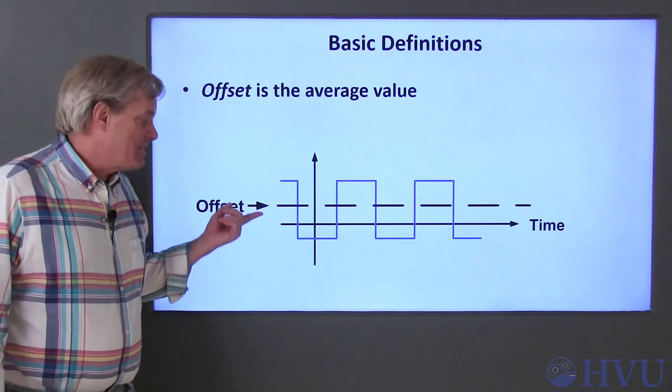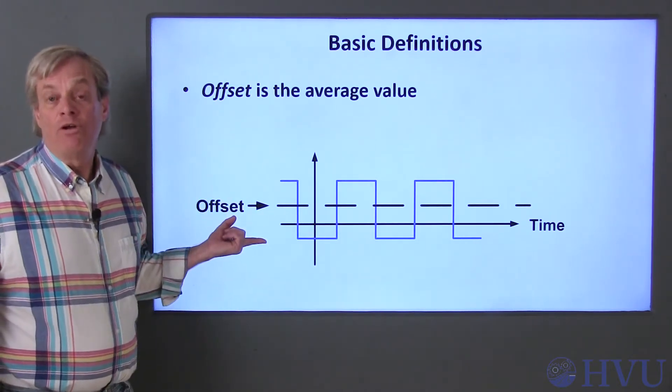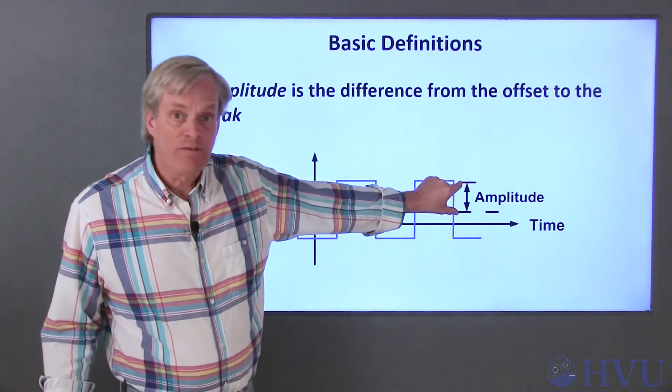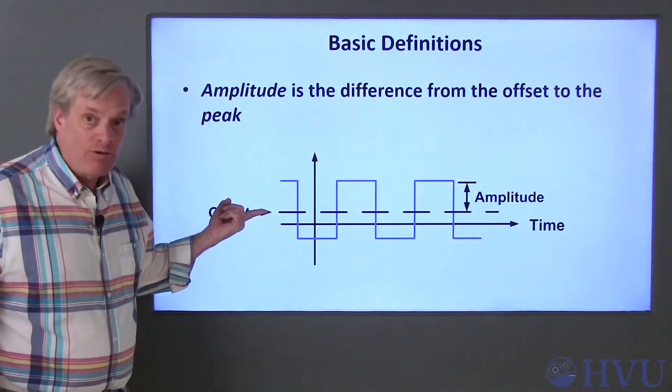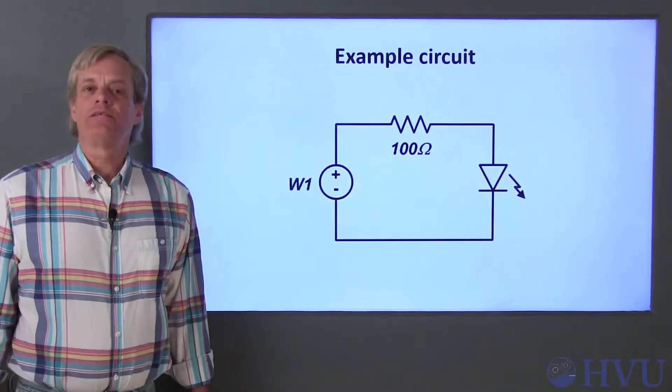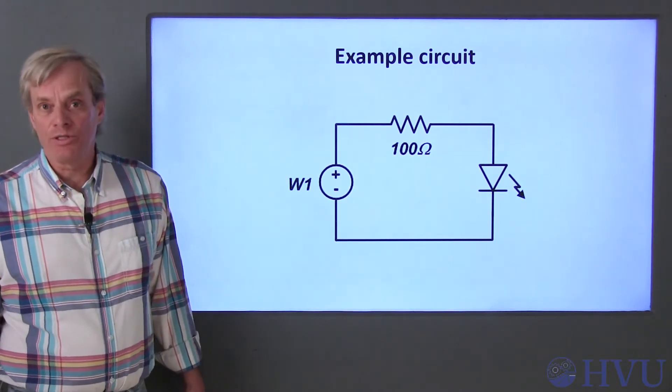The offset of a signal is its average value. It simply moves the entire signal up or down along the vertical axis. The amplitude of the signal is the vertical distance between the average value and the peak value.